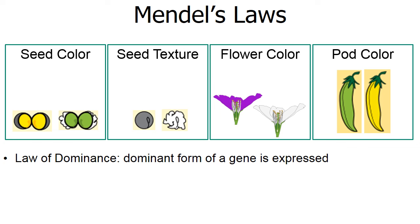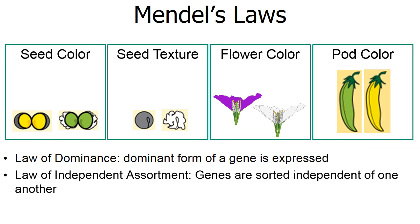Another law that Mendel's work uncovered is the law of independent assortment, which states that genes are sorted independently of one another. Therefore, there was no connection between flower color and seed texture. Pod color had nothing to do with seed color. Seed color had nothing to do with texture. All of these different traits were independent of one another.